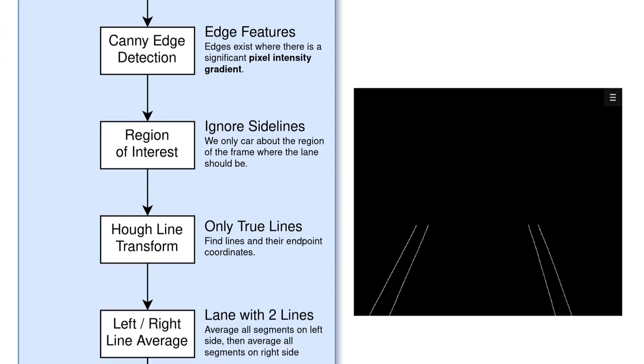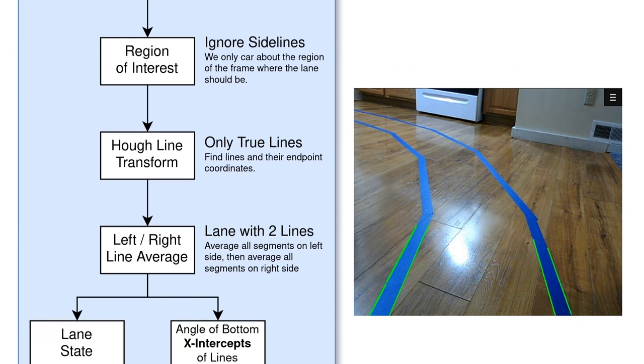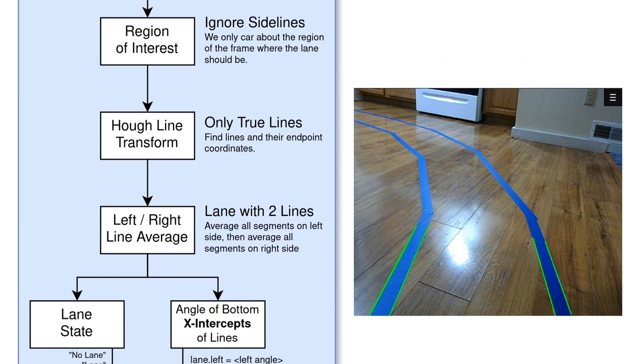Furthermore, we get line segments using the Hough line transform, which returns the endpoint coordinates of edges that are specifically straight lines. We need to get only two lines to represent the lane, so we separate all segments with bottom y-intercepts on the left side of the frame from those on the right side of the frame. Then we average the two groups of segments to get the left and right lane lines.